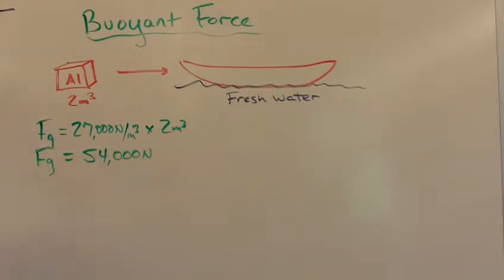Alright, that's the weight of this thing. Now, what does that mean? Well that means that the buoyant force, once this thing is constructed and put into the water, will have to be equal to or greater than 54,000 newtons if this thing is to float. Because right now, if you put a chunk of aluminum in the water like that, it's going to drop right down to the bottom.